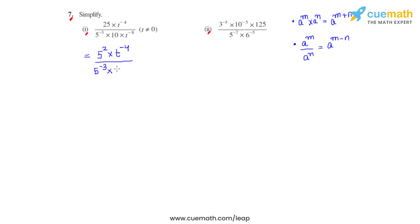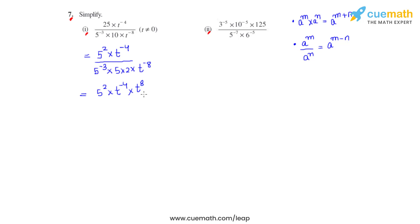Now 10 can be written as a product of 5 and 2, and we multiply it with t raised to negative 8. We get 5 raised to 2 times t raised to negative 4. As we have t raised to negative 8 and the bases are the same, when it goes to the numerator, the power will become positive.